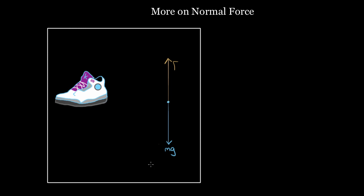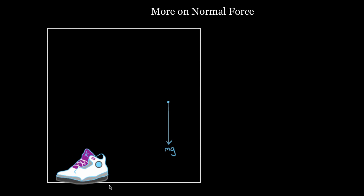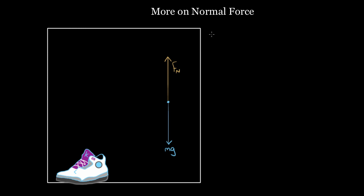If the shoe is not in contact with the surface, you don't have a normal force. It's not until this shoe makes it to the ground or touches another surface that you'll have that normal force. So if we stick this shoe right here and we let it rest on the ground, now you'll have a normal force, and that normal force will point up. And this is what people want to say, and it's true when the surfaces are in contact, but if they're not in contact, you don't have a normal force.